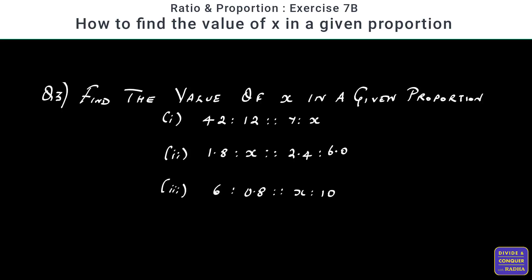In this video we'll be solving question number 3 from exercise 7b of ratio and proportion — find the value of x in a given proportion. Earlier we solved sums related to checking if given numbers are in proportion using the concept that product of means equals product of extremes. If you want to watch those videos, the link is given in the description below.